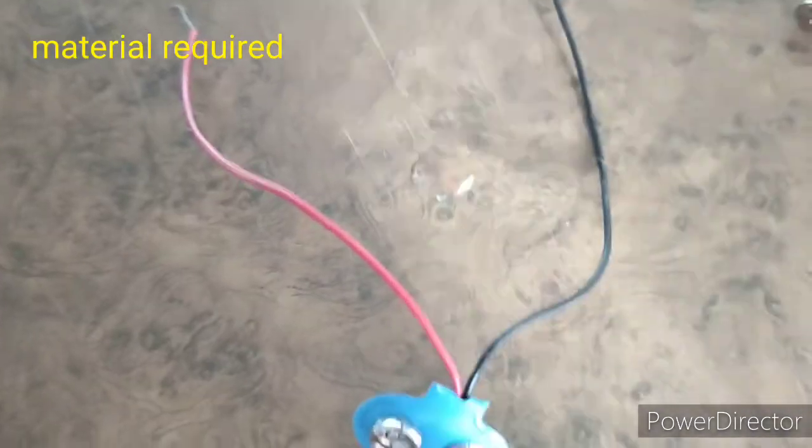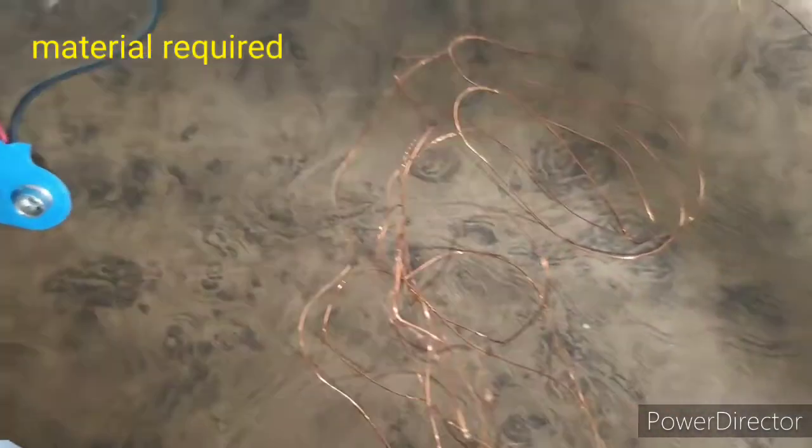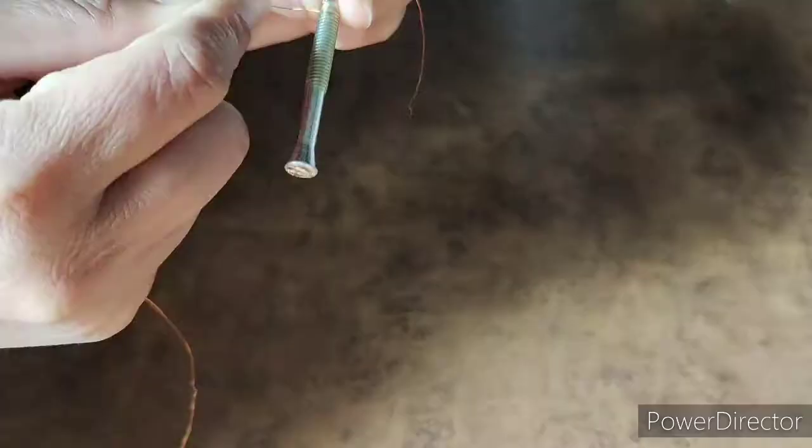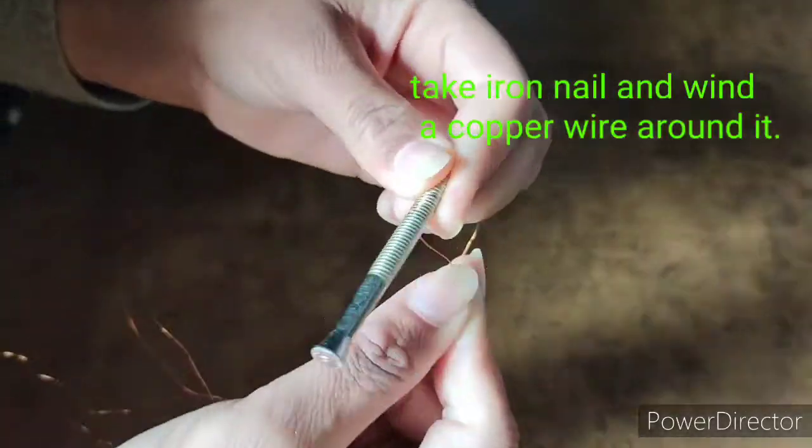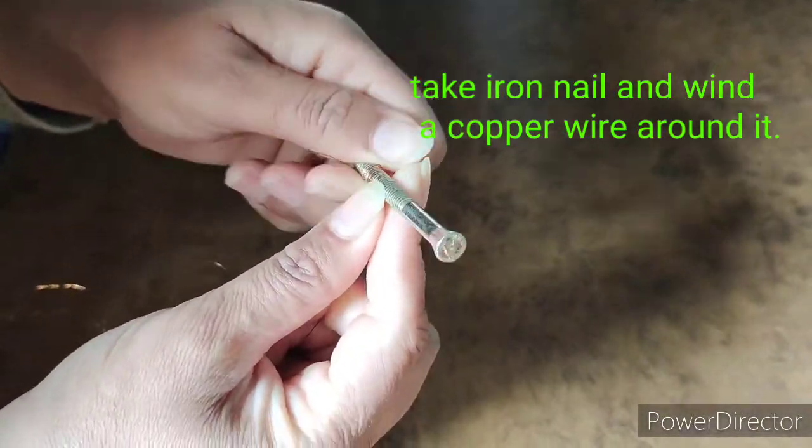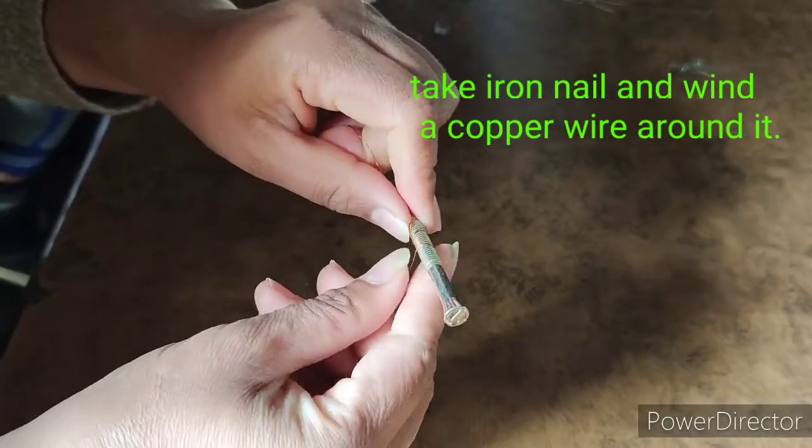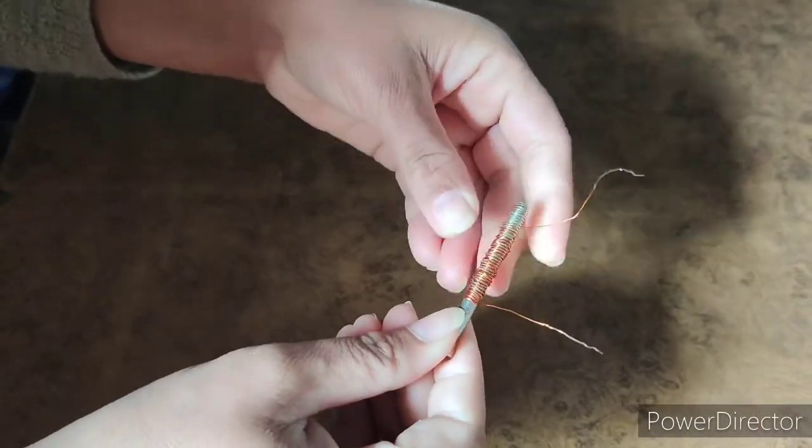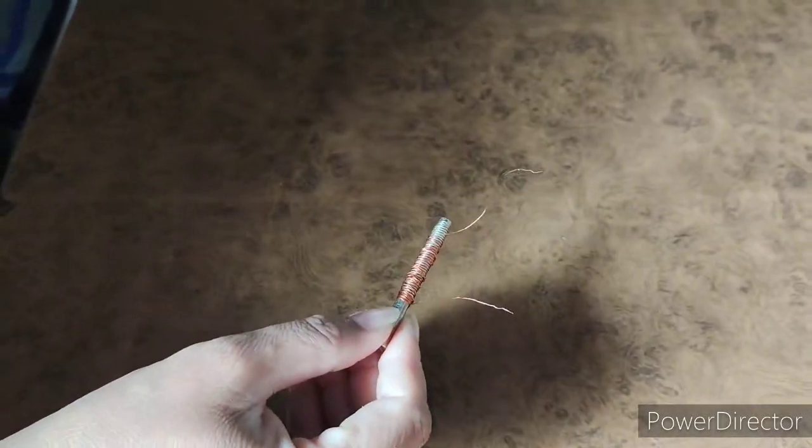Let's start with an activity. Take an iron nail and wind a copper wire around it. Join both ends of the copper wire with the battery cap.